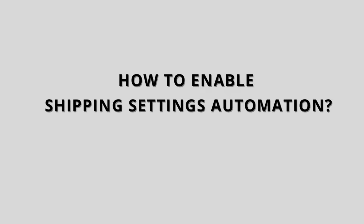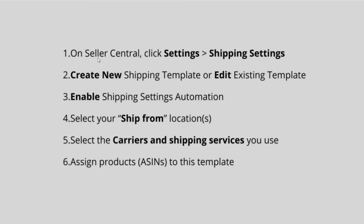Here is how to turn on shipping settings automation on Amazon. Log into Amazon Seller Central, go to Settings, and click Shipping Settings. Create a new shipping template or edit an existing template. Enable shipping settings automation, select your ship-from locations, select the carriers and shipping services you use, and then assign products to this template.